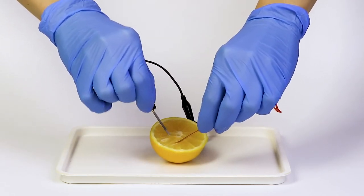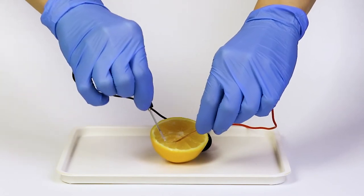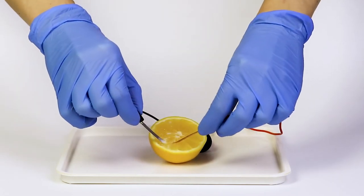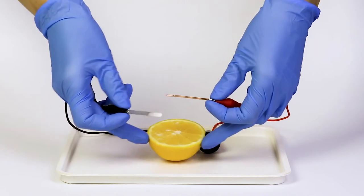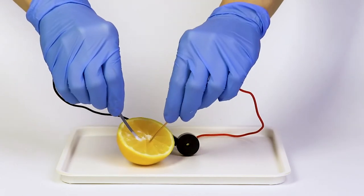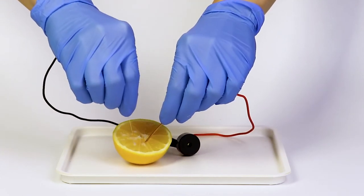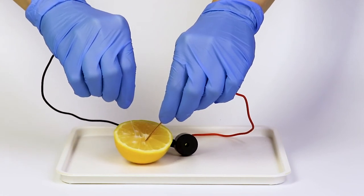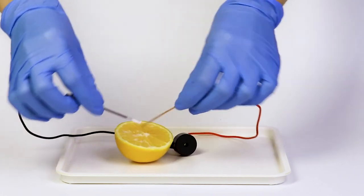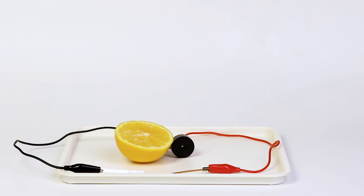Inserting pieces of copper and magnesium in a lemon creates an electrical circuit, and electrons start flowing from the more active metal, magnesium, towards the less active metal, copper. Because of that, magnesium will gradually be oxidized and dissolved.